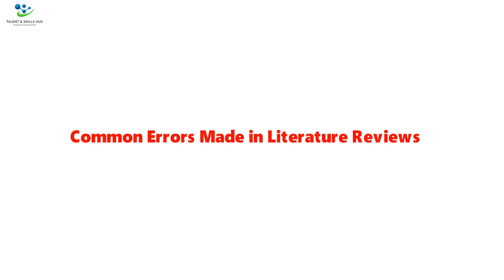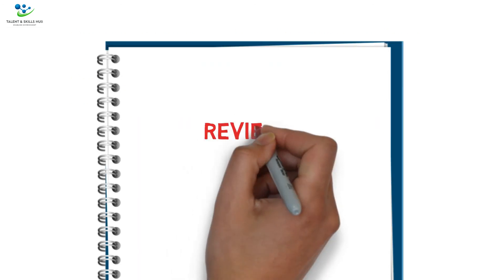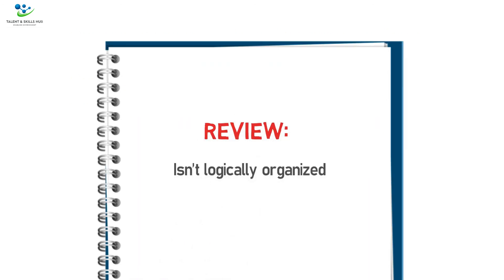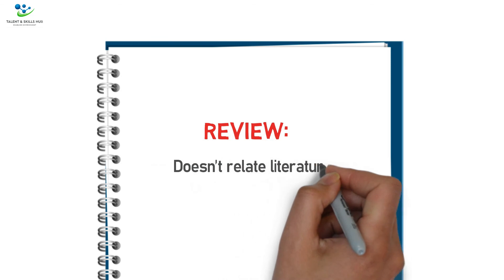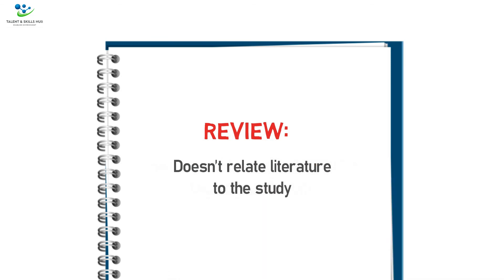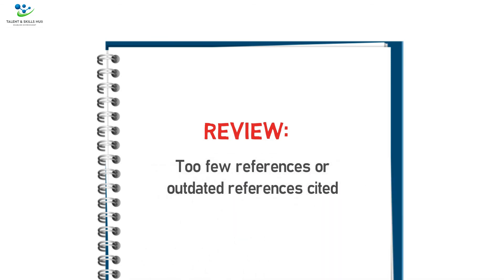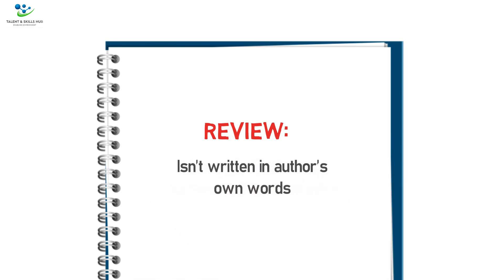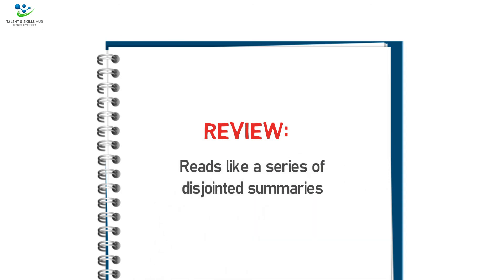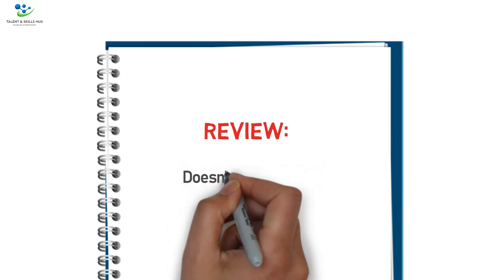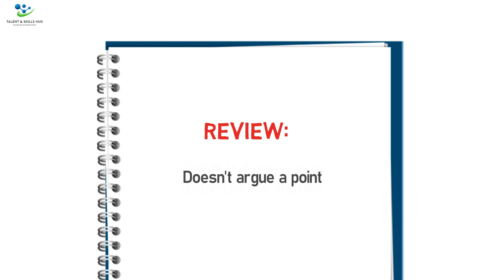Common errors made in literature reviews: the review isn't logically organized; the review isn't focused on the most important facets of the study; the review doesn't relate literature to the study; too few references or outdated references are cited; the review isn't written in the author's own words; the review reads like a series of disjointed summaries; the review doesn't argue a point; and recent references are omitted.